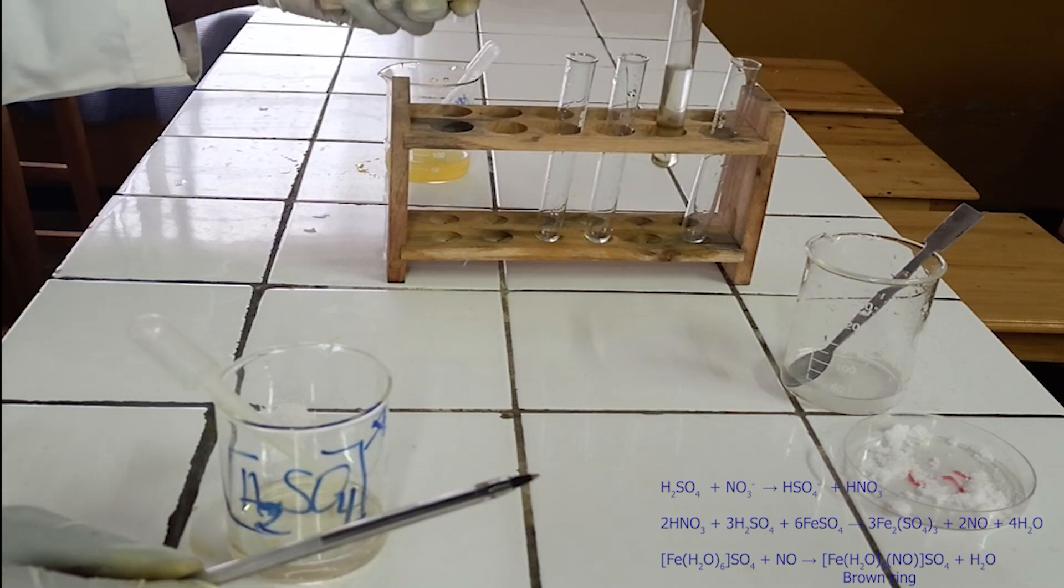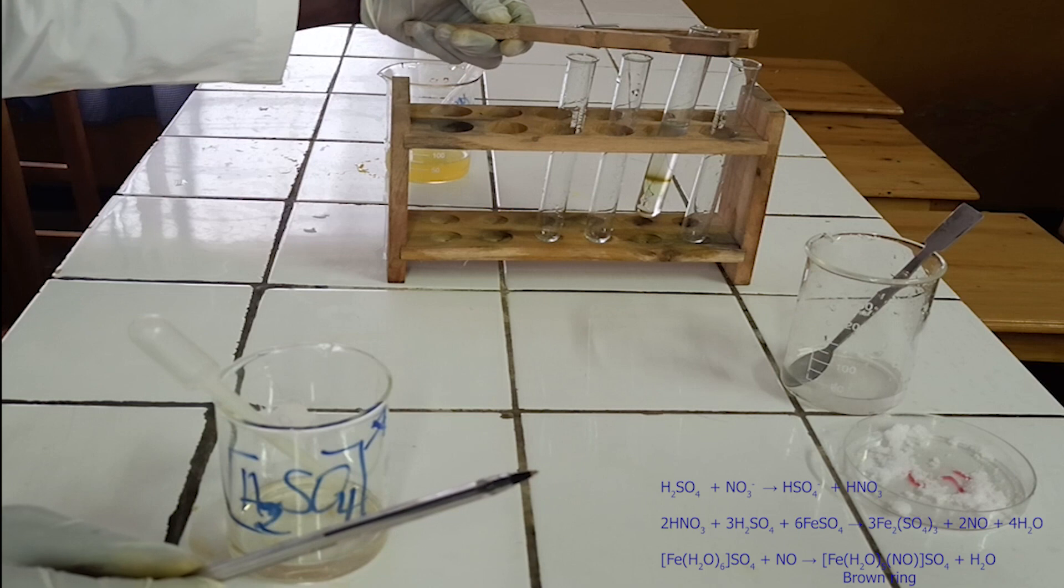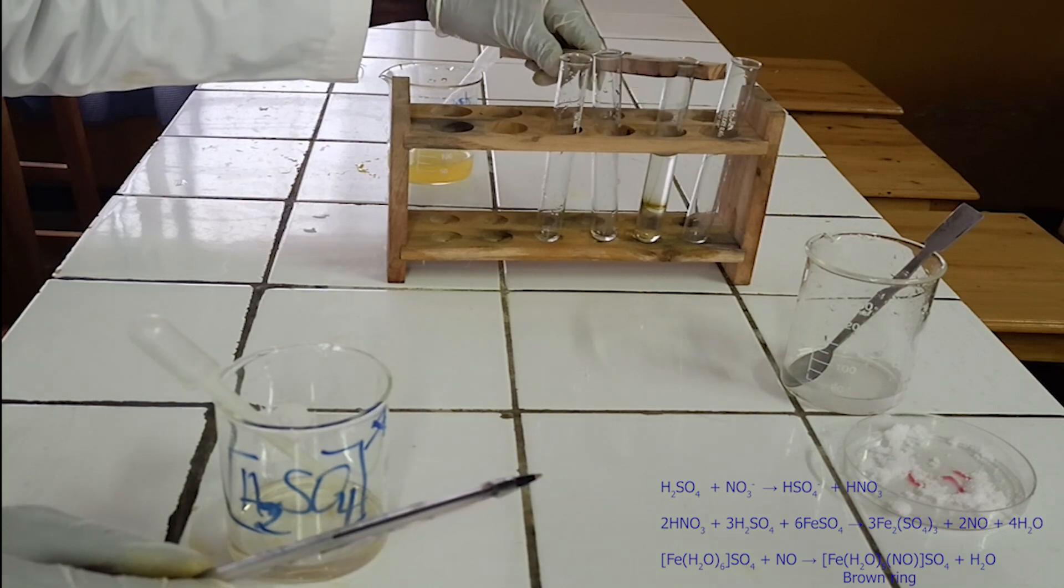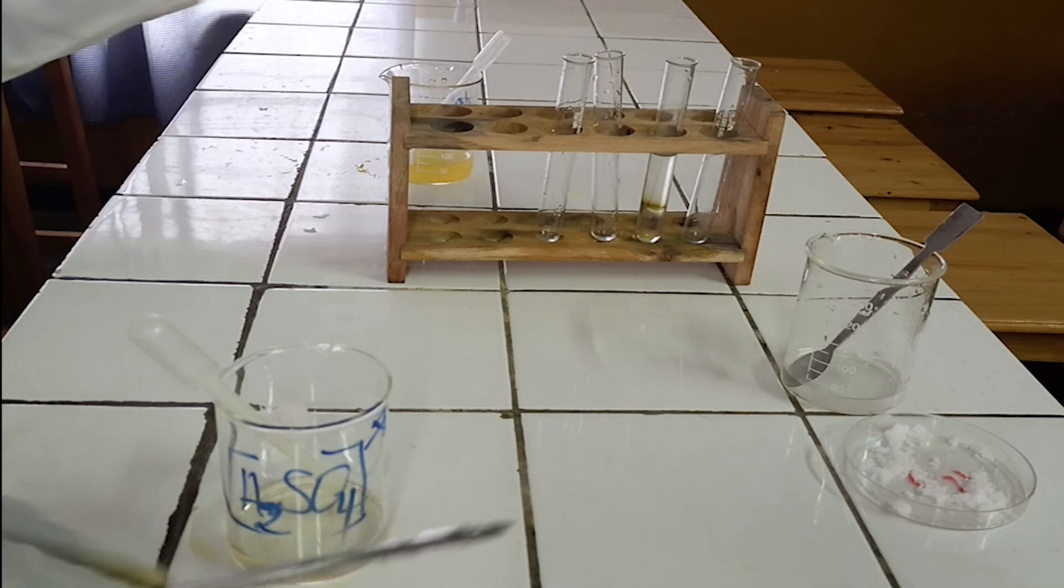Freshly prepared iron-2-sulfate is used to test nitrate because iron-2-sulfate oxidizes immediately to iron-3-sulfate when exposed to oxygen gas.